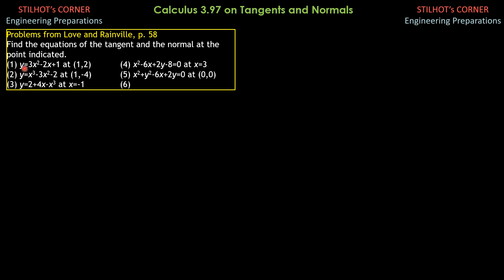Number 1: y equals 3x squared minus 2x plus 1 at the point (1, 2). The slope of the tangent is y prime, or m, and the slope of the normal is the negative reciprocal of the slope of the tangent. Remember that the equation of the tangent is ax plus by equals ax1 plus by1 — that's the general form. The slope is the negative coefficient of x divided by coefficient of y, as I already explained in different playlists on finding slopes of lines.